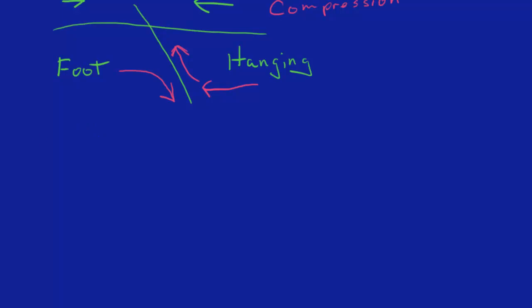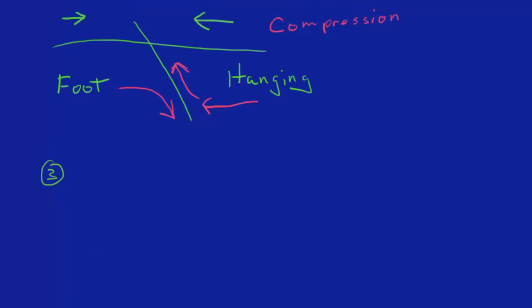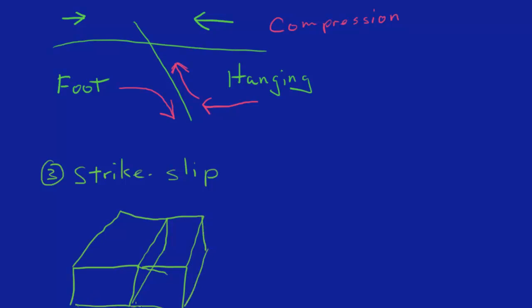And then the last one, number three, is strike-slip fault. And this one's a little bit harder to draw. So we have a block here and a block here. And the animation's gonna be so much better than my drawing. And we're gonna have a shearing, where you have one force going this way and one force going that way. And this is called shearing.